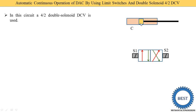Inside the cylinder, the piston separates the cap side port (C) and the rod side port (R). At the end of the piston rod, one cam is provided to operate the limit switch. While at home we operate electric switches by hand, in automatic circuits these switches are operated by the cam fitted at the end of the piston rod.